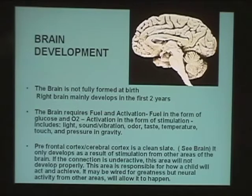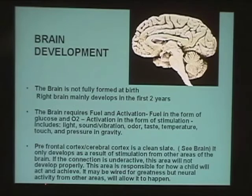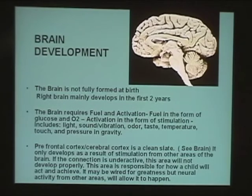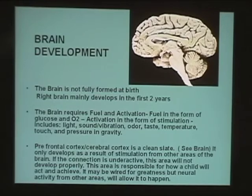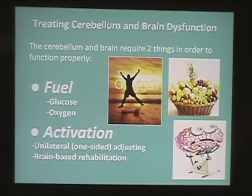Many therapies absolutely do not recognize this from a neuroscience standpoint. This area — the prefrontal cortex — is responsible for how a child will act and achieve. It may be wired for greatness, but neural activity from other areas must allow it to happen. If those lower brain centers are weak, the frontal cortex has very little chance of developing properly. When treating the brain, it needs glucose, oxygen, activation, one-sided activation, and brain-based rehabilitation.